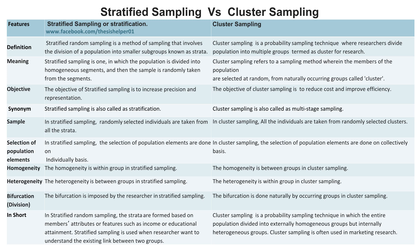In stratified sampling, the selection of population elements is done on an individual basis. Whereas, in cluster sampling, the selection of population elements is done on a collective basis.